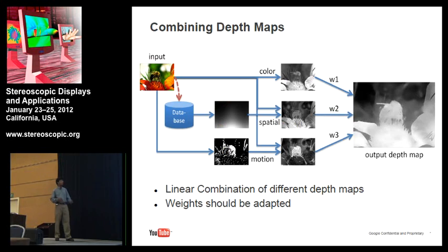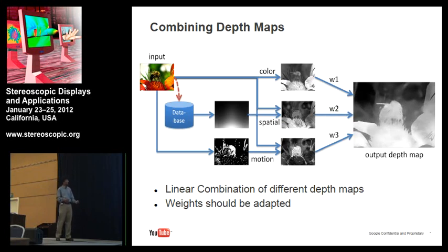We have different ways of getting depth maps: one from color, one from spatial, one from motion, and one more from the nearest neighbor approach. We combine them using certain weights W1, W2, W3, and the weights should really be adapted because for certain scenes there is no local motion, so we don't want to penalize the other parts because of that. The weights should be adapted as we analyze the video. After combining them, we get the final depth map as our output.